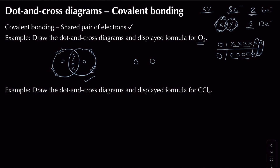Any electrons not involved in bonding are drawn on the outer shell as lone pairs. In the displayed formula, we don't need to show lone pairs or non-bonding electrons, but we do show the shared pairs: one shared pair equals one bond (one line), two shared pairs equals a double bond (two lines), and three shared pairs equals a triple bond (three lines).